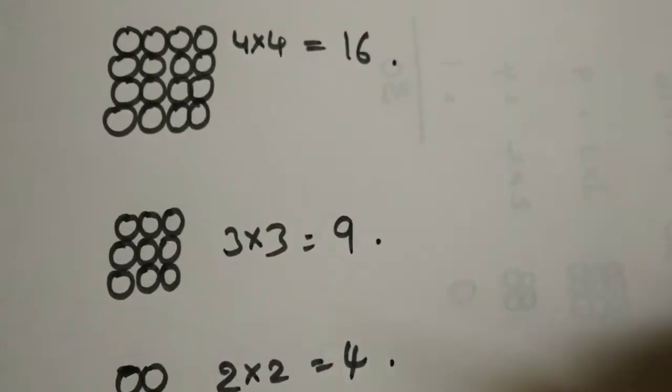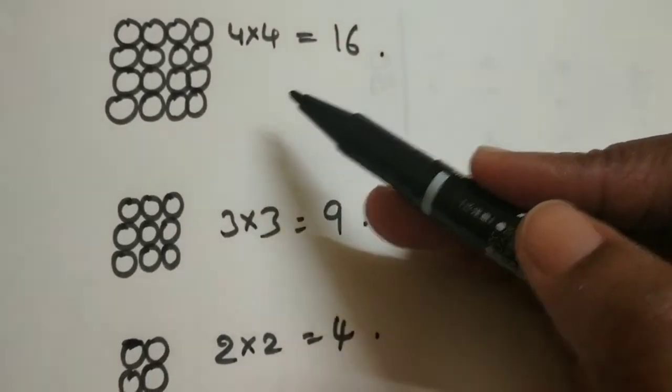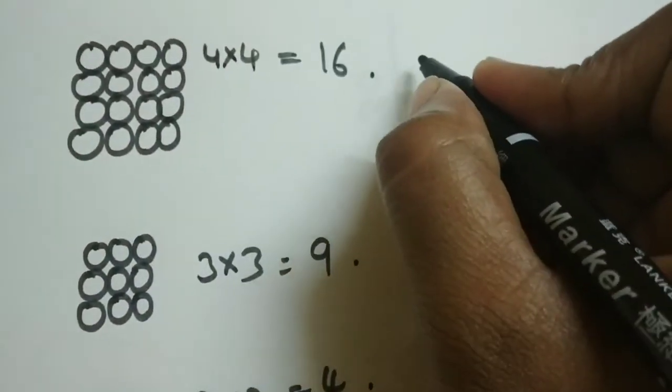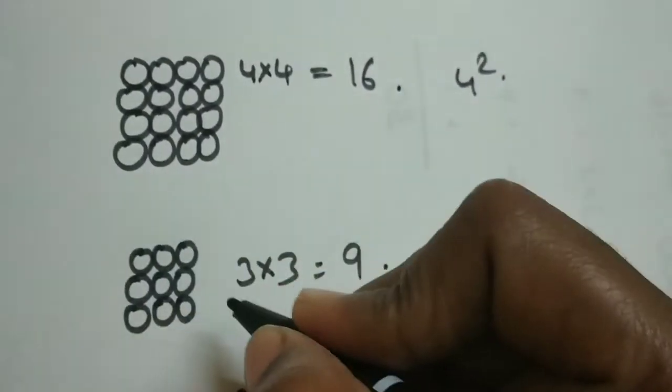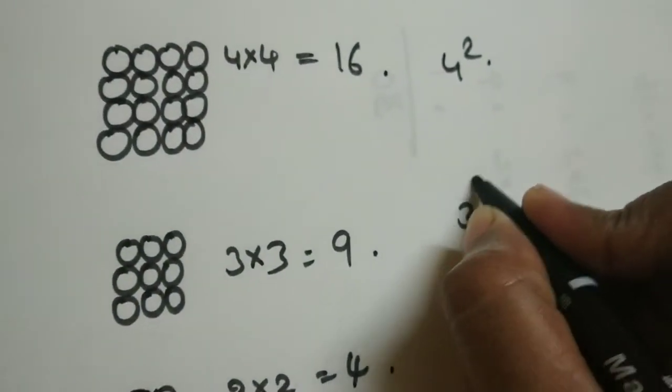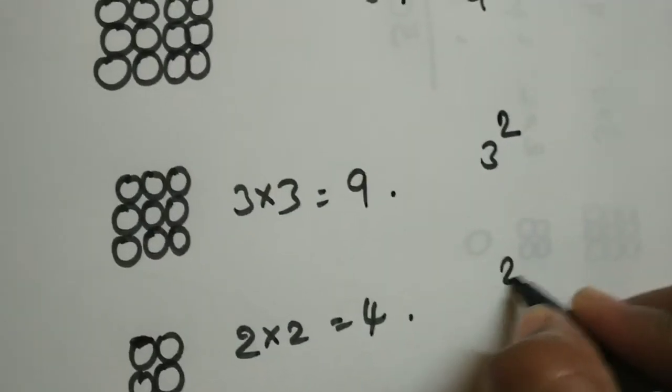One more other way also is there to count total number of the squares. That is, here the base, first base is 4 by 4. This can be written as 4 squared. And 3 by 3 grid, 3 into 3, this can be written as 3 squared. Here it is 2 squared. And here 1 can be written as 1 squared.